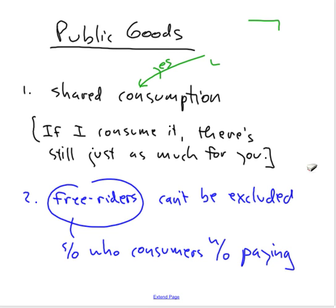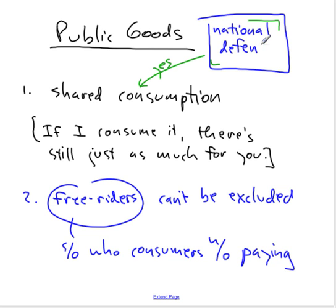Let's look at national defense. Yes, national defense is a shared consumption good — if I'm protected from attack by a foreign country, so are you. The fact that I'm protected doesn't water down your protection. And it's also the case that free riders can't be excluded. If national defense is being provided by the government for you, it's also being provided for me. If I don't pay my taxes, I'm still protected. The government can't put a big target on my roof and say, 'Hanson didn't pay his taxes, go ahead and bomb him.' National defense — we consume it together, and free riders cannot be excluded. National defense, therefore, meets the category of a pure public good.